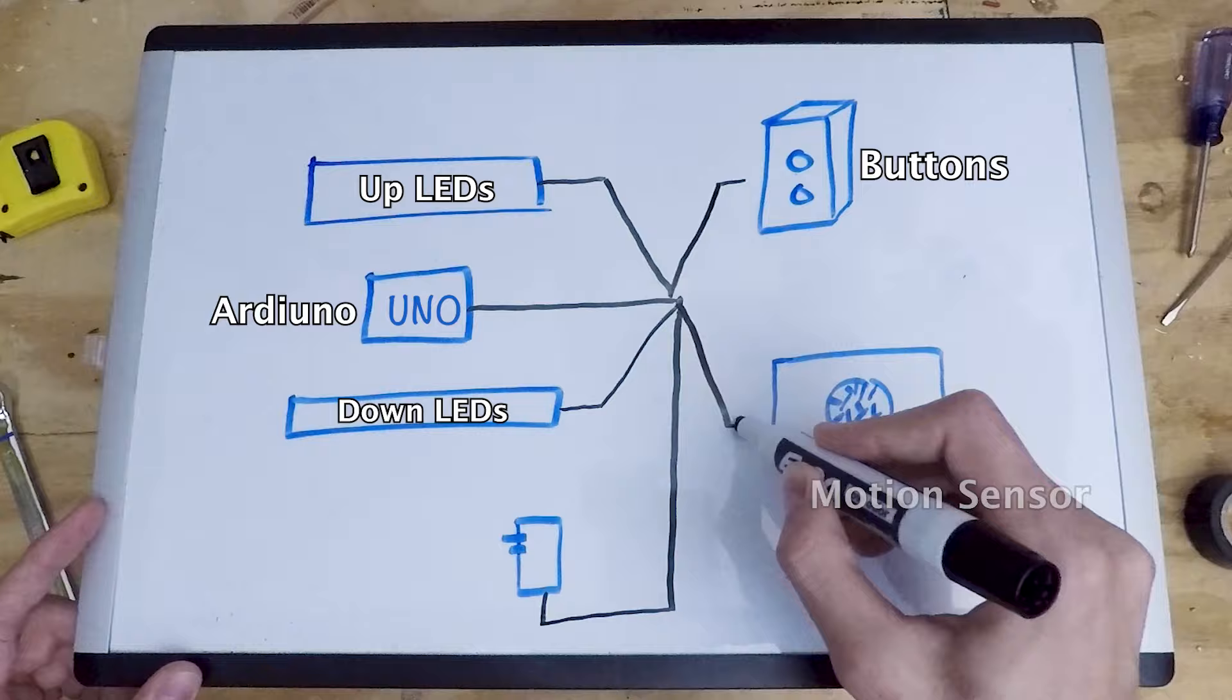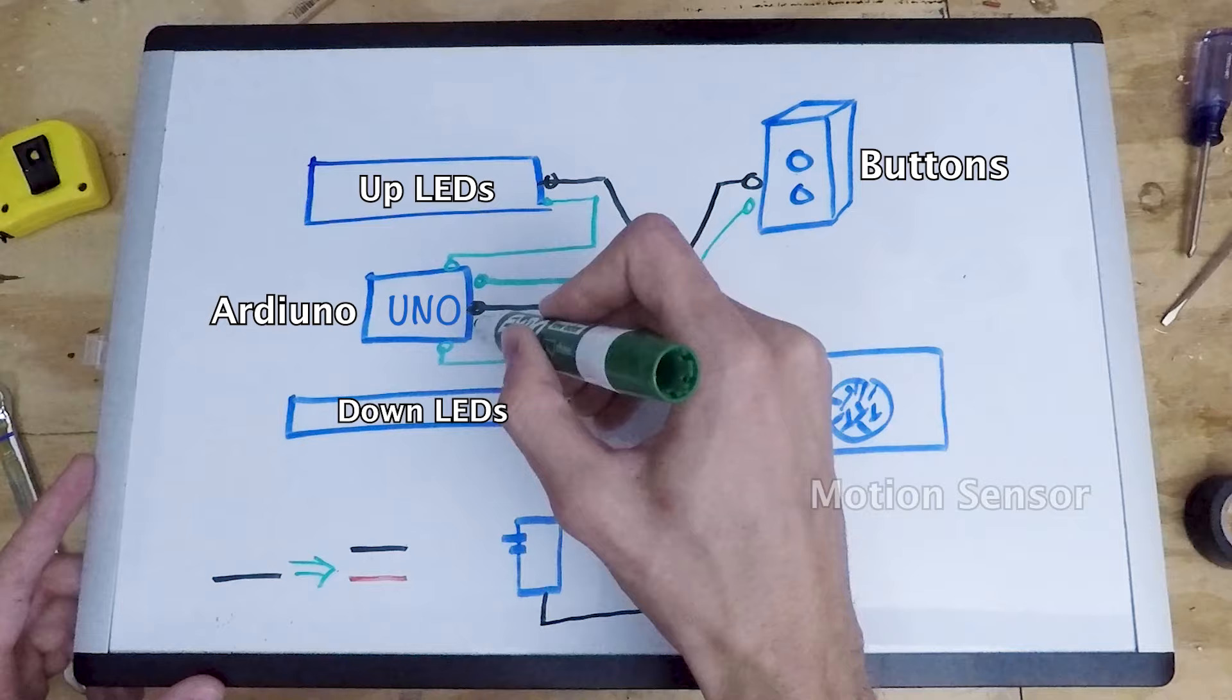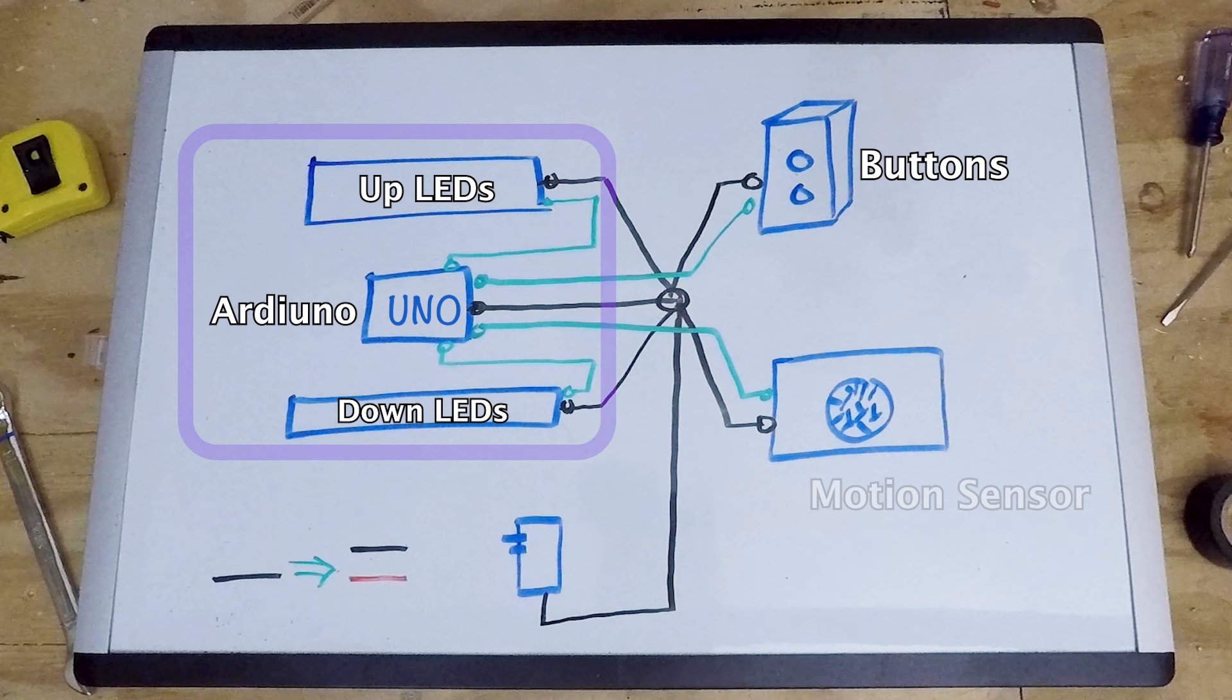So the power is going to run to all the components as shown. Just remember I drew one line to keep it simple, but that black line represents power and ground. Then there will be data lines running from both LEDs, the button, and the motion sensor to the Arduino so it can talk to all of them. These and the Arduino are all going to be housed within the floating shelf. Another quick thing to note is I will wire the motion sensor but I will set it up and program it in a later video.